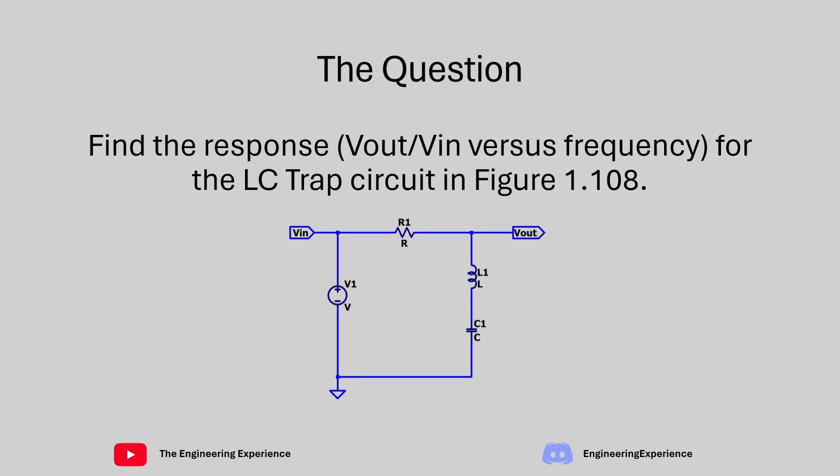You see the circuit looks like this so we have a series resistor and a parallel L and C. L being the inductor and C being the capacitor. When it says the response it's asking us to find the gain of the circuit against frequency. So V out divided by V in versus frequency.